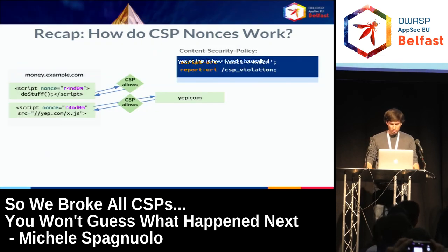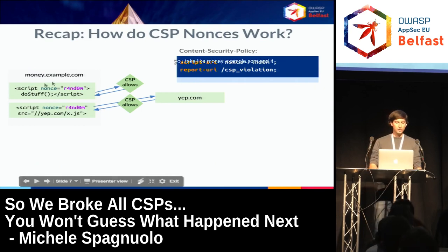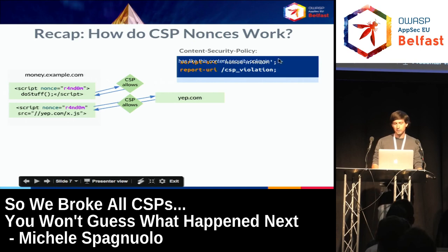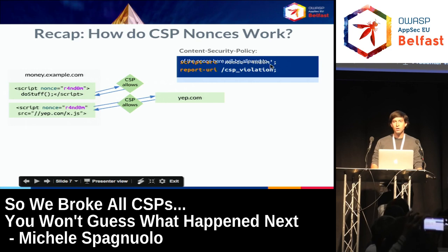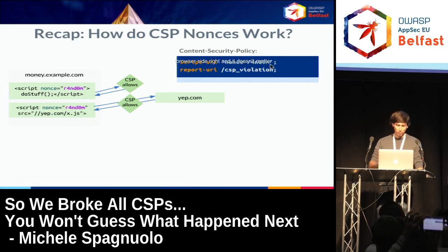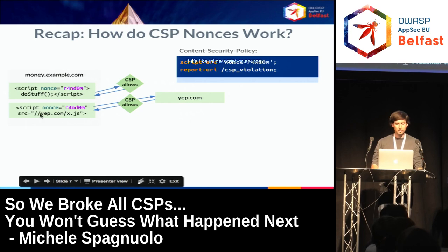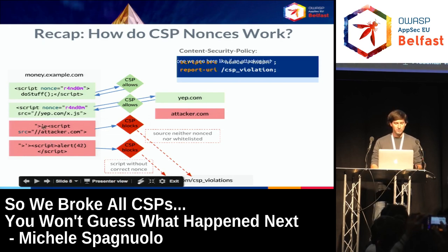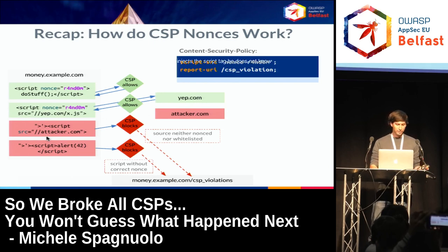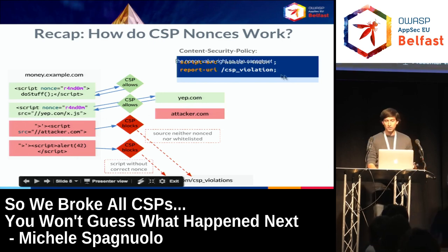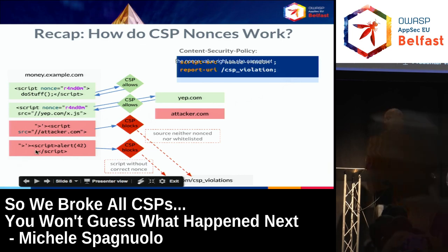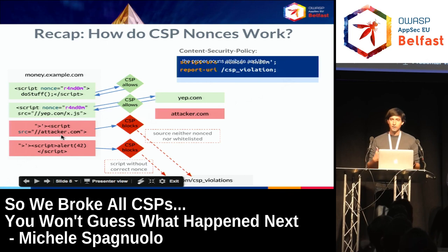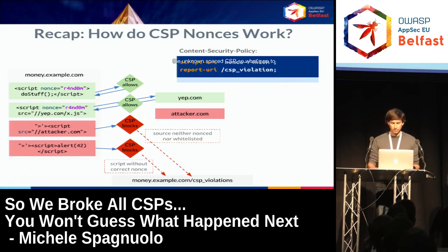For example, at money.example.com with a CSP header, scripts with a nonce attribute matching the header's nonce value will be allowed to execute — whether inline or from a src. On the other hand, with classical reflected XSS, an attacker who injects a script tag does not know the nonce value, so they cannot set the proper nonce attribute and the browser will reject those scripts. That's the basic idea behind nonce-based CSP.